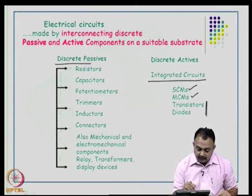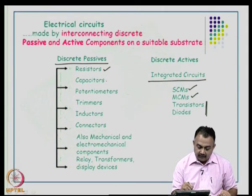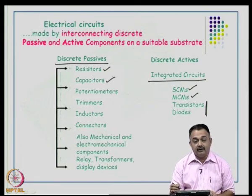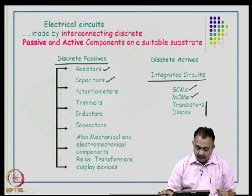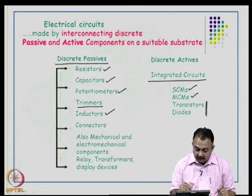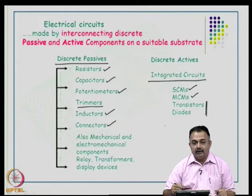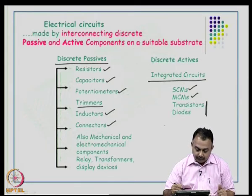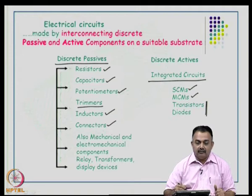For discrete passives, you will use resistors of various forms, types, and values; capacitors of various values, sizes, and types — available in through-hole or surface mount device technology format. Then variable resistors, potentiometers, trimmers, inductors, inductor coils, and connectors. There are various types of connectors available today, and they are very essential when integrating two or more boards in a large system. You will also use mechanical and electromechanical components like relays, transformers, display devices, liquid crystal displays, and other forms of display.